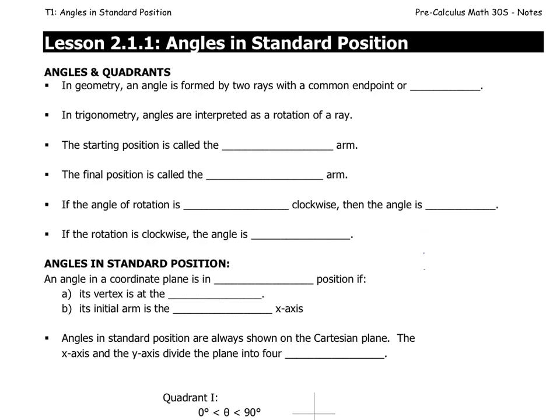In section 2.1 — I'm calling it 2.1.1, the first part of 2.1 — we're going to consider angles in standard position. So what are angles, what are quadrants, that kind of stuff? In geometry, an angle is formed by two rays that have a common endpoint called a vertex. So you have a vertex and two rays and it forms an angle. We've seen that before.